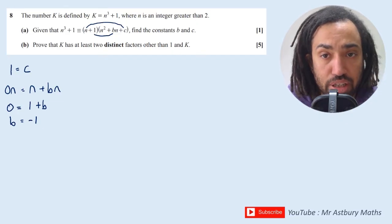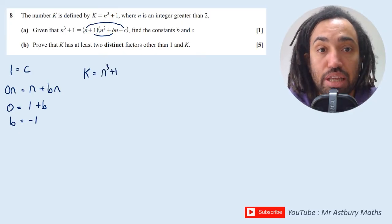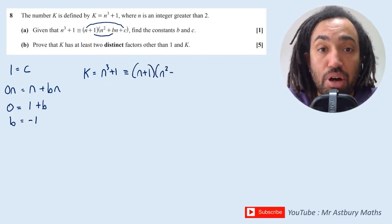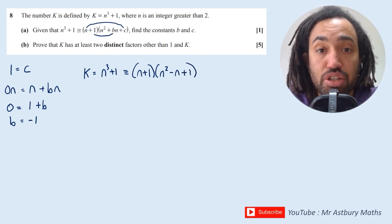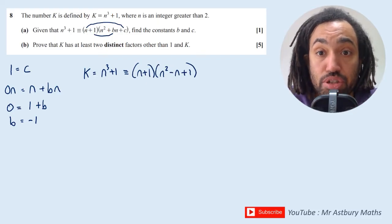So what we've done in the first part is we've shown that k, which we know is equal to n³ + 1, is equivalent to (n + 1)(n² - n + 1). So essentially what we've done is we've shown that k can be split up into two factors.